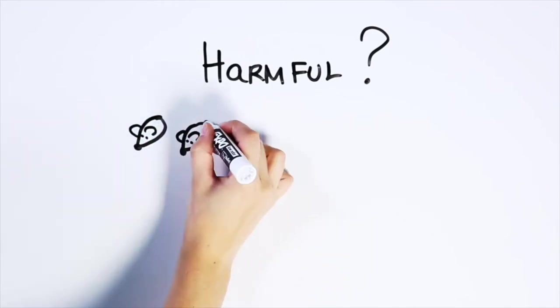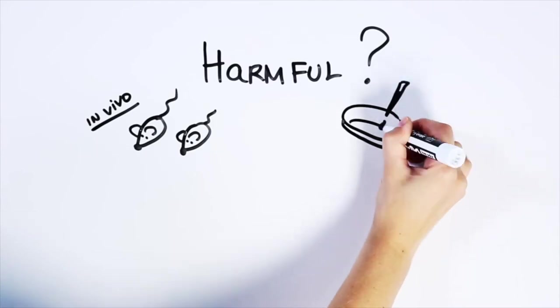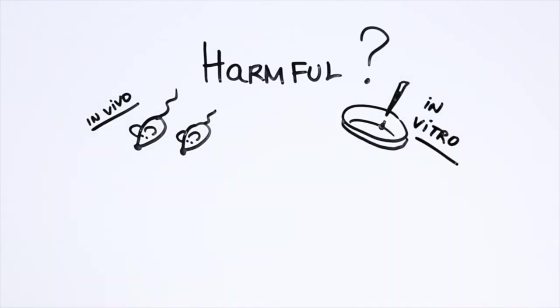One way is to do research on animals, called in vivo studies, or on cells in test tubes and petri dishes. These are called in vitro studies. But such research can only tell us so much.